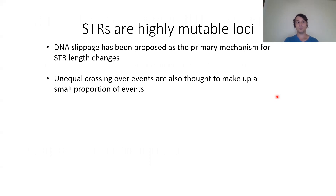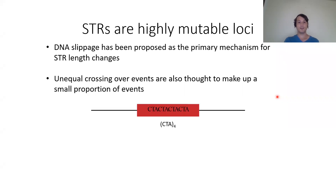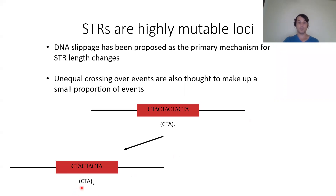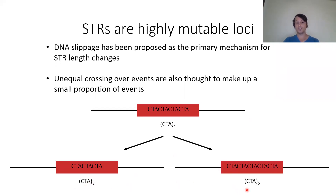STRs are very highly mutable, with a couple of proposed mechanisms. The primary mechanism is DNA slippage: during replication, slippage events occur and you end up with larger or smaller STR loci. A secondary mechanism is unequal crossing over or recombination events, thought to make up a much smaller proportion and less supported in the literature. For example, that CTA repeat of four can change to three or five repeats through slippage.